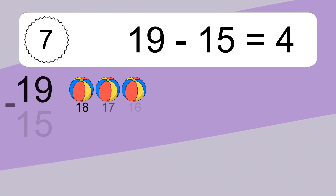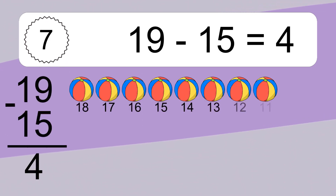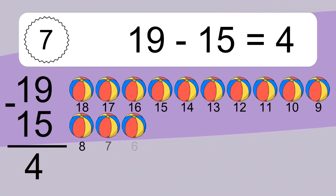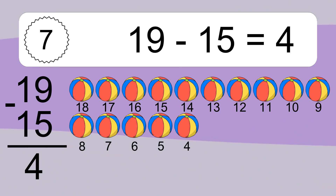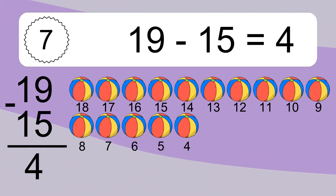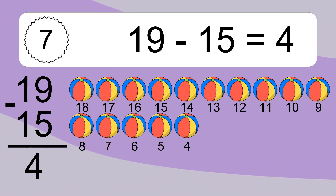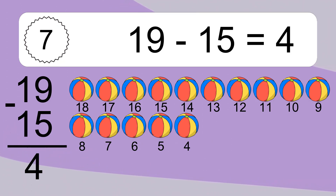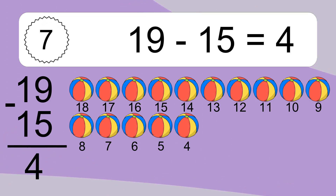19 minus 15 equals 4. Let's count it. 18, 17, 16, 15, 14, 13, 12, 11, 10, 9, 8, 7, 6, 5, 4.